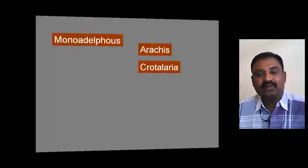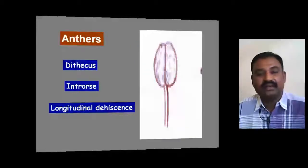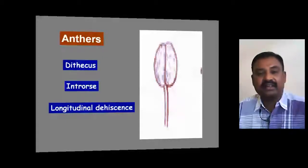Examples of Fabaceae members showing monadelphous condition are Arachis hypogaea and Crotalaria. The anthers are dithecous and exhibit longitudinal dehiscence.